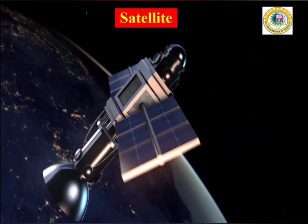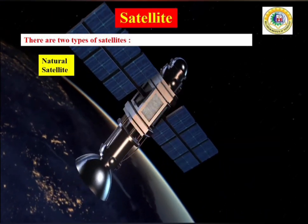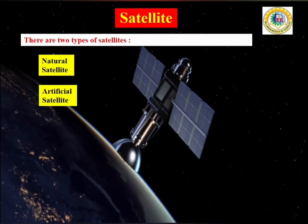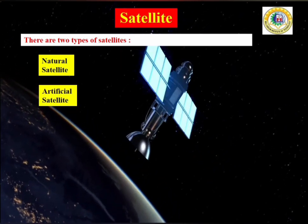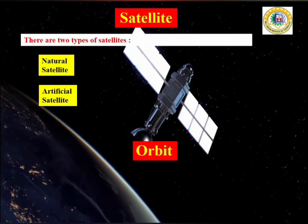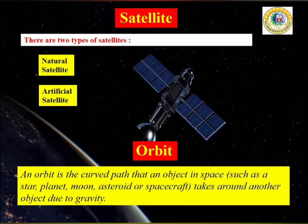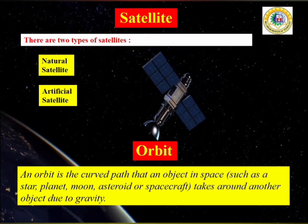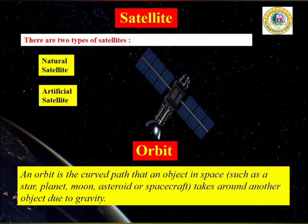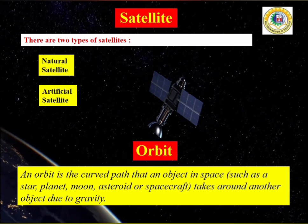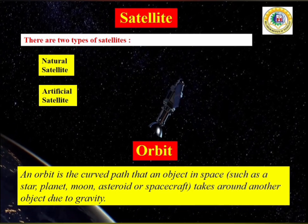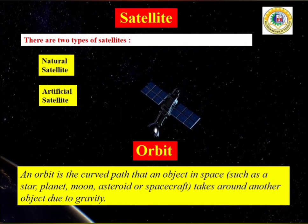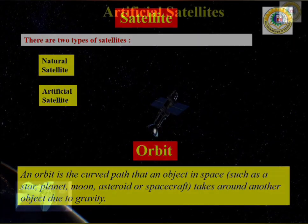Satellites are of two types: one is the natural satellite and another is the artificial satellite. Orbit is the curved path that an object in space — such as a star, planet, moon, asteroid or spacecraft — takes around another object due to gravity.